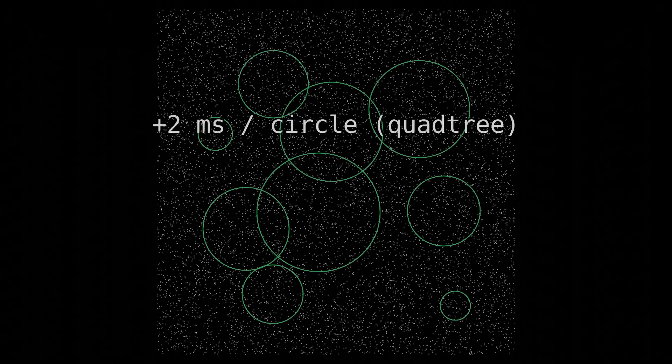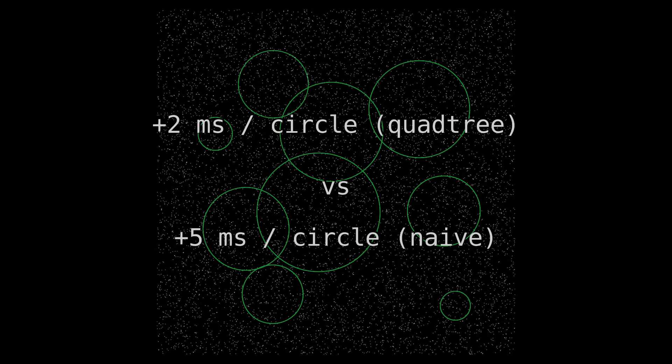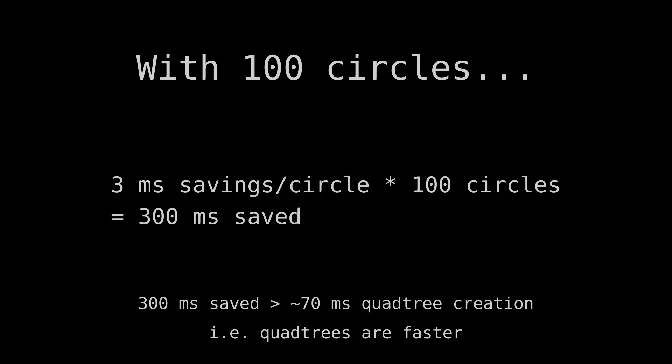However, consider the fact that we might need to find the points within additional circles. Since we don't need to remake the quadtree each time, each subsequent circle will only add another 2 milliseconds, compared to the 5 it would add with the naive approach. With 100 circles, we would have saved 300 milliseconds — more than enough to make up for the 70 or so it took to make the quadtree.